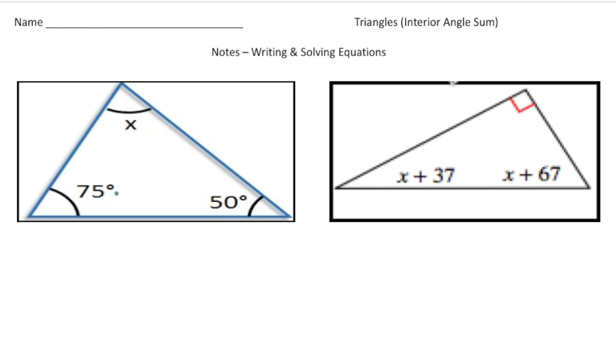So here we have a triangle on the left-hand side, and we want to solve for x. And now that we know that the three angles add up to 180 degrees, we can write an equation. So our equation is going to be x plus 75 plus 50 equals 180.